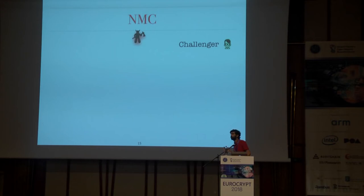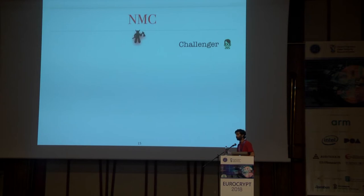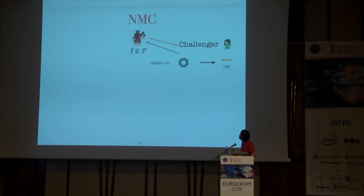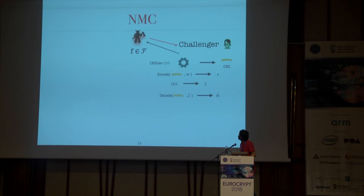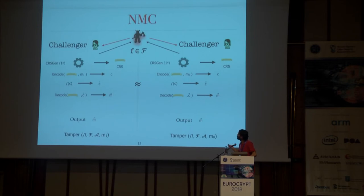Here is a simpler definition of non-malleable codes — we actually achieve a much stronger definition than this, which implies the previous definition discussed in the prior talk. Consider this experiment: a challenger generates the CRS and gives it to the attacker. The attacker chooses a tampering function F from the family. The challenger encodes some message and generates codeword C, applies the tampering function to get the tampered codeword, then decodes it to obtain m-tilde. The security guarantee is that the view of this experiment is indistinguishable for any two messages m0, m1, and for all tampering functions f in the tampering class.